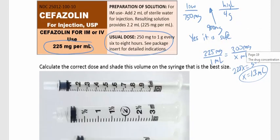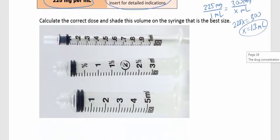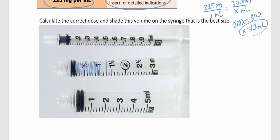Looking at the syringes for 1.3 ml: the smallest syringe only goes up to 1 ml — too small. The largest is too big. We want the middle syringe. The markings go by increments, and we want to shade to 1.3 ml — filling the syringe right there.